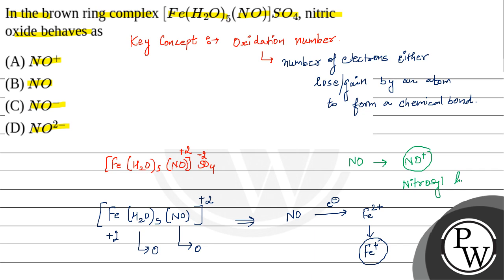So from here we can say that in the brown ring complex [Fe(H2O)5(NO)]SO4, the nitric oxide behaves as NO positive. Option A will be the final answer for this question. I hope you understood the solution, all the very best.